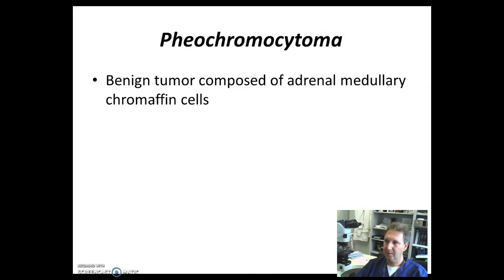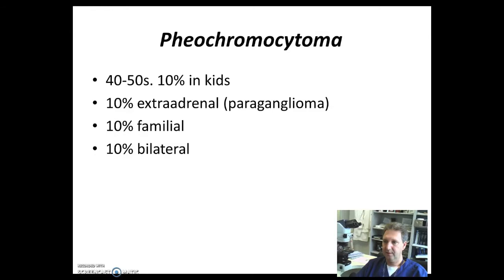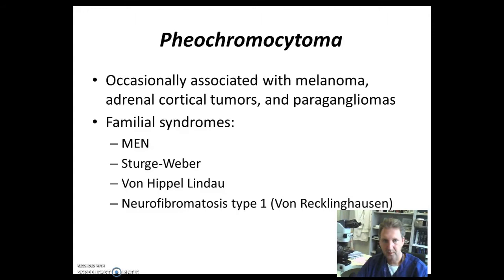Pheochromocytoma is a benign tumor composed of adrenal medullary chromaffin cells, most commonly in young adults aged 40 to 50, and 10% can be seen in kids. 10% are extra-adrenal, also called paragangliomas, 10% familial, and 10% bilateral. Occasionally they are associated with melanomas, adrenal cortical tumors, and paragangliomas. Familiar syndromes associated with pheochromocytoma include MEN, Sturge-Weber, Von Hippel-Lindau, and neurofibromatosis type 1, Von Recklinghausen.